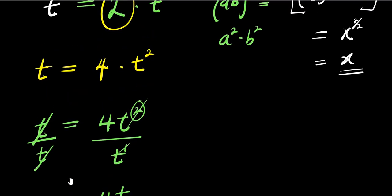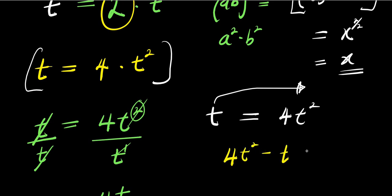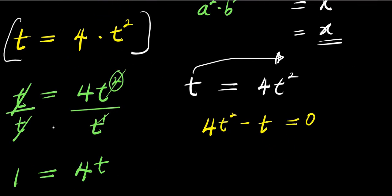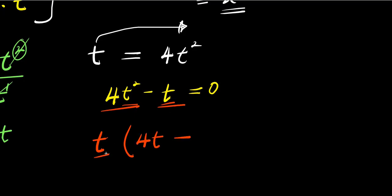Now this is giving us one solution. Alternatively, if we have t equals 4t squared, we can move this t over here and have 4t squared minus t equals zero. So from here we have t appearing in both terms, and we can factor out one t.